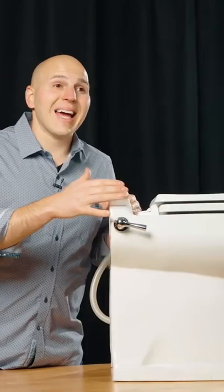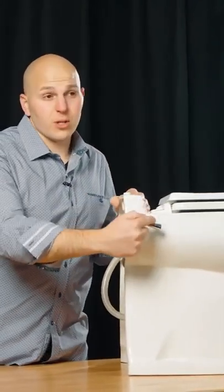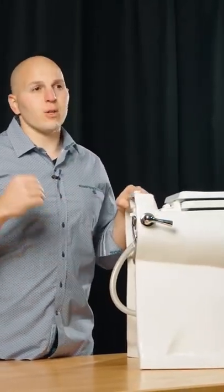This is Dometic's 8700 series macerating toilet. This is our closest to at home. It's shown here with the flush handle, and you can also get it with a flush button.